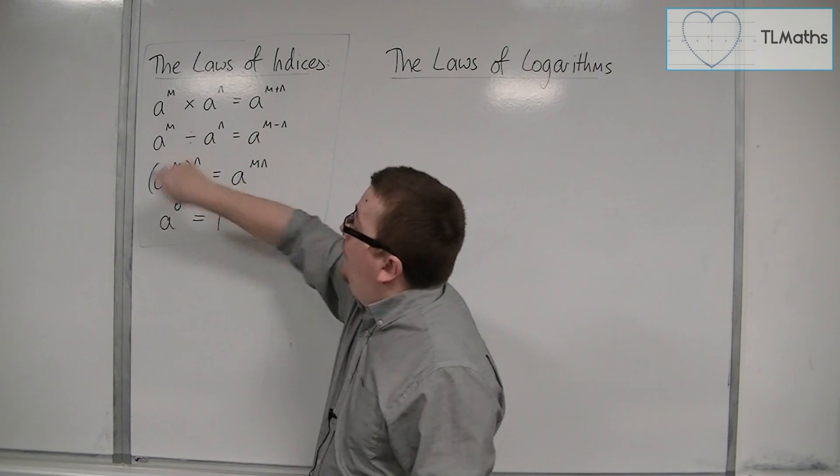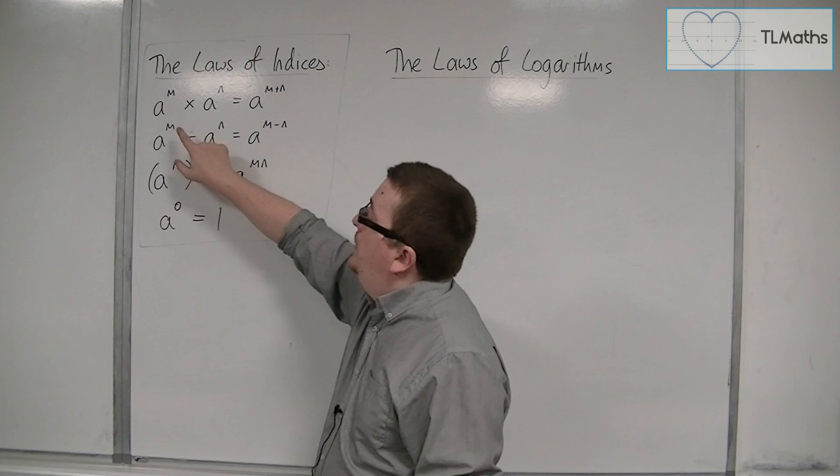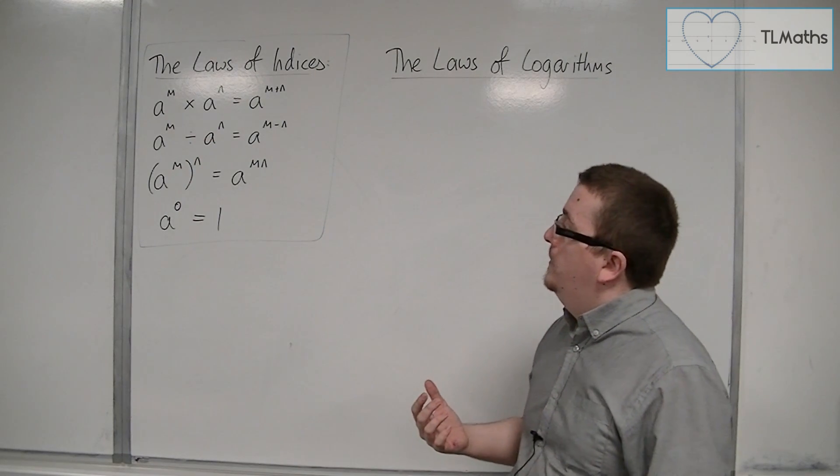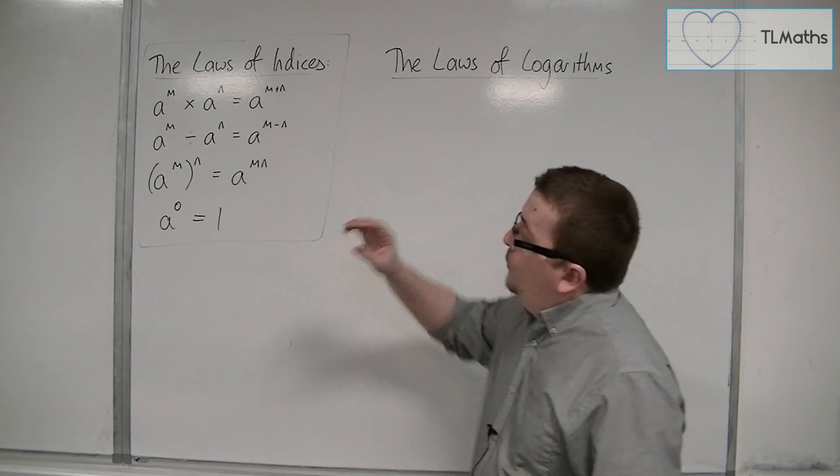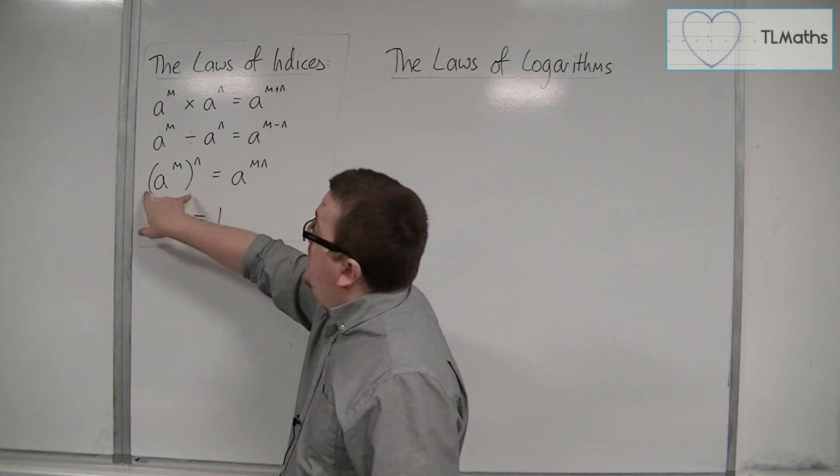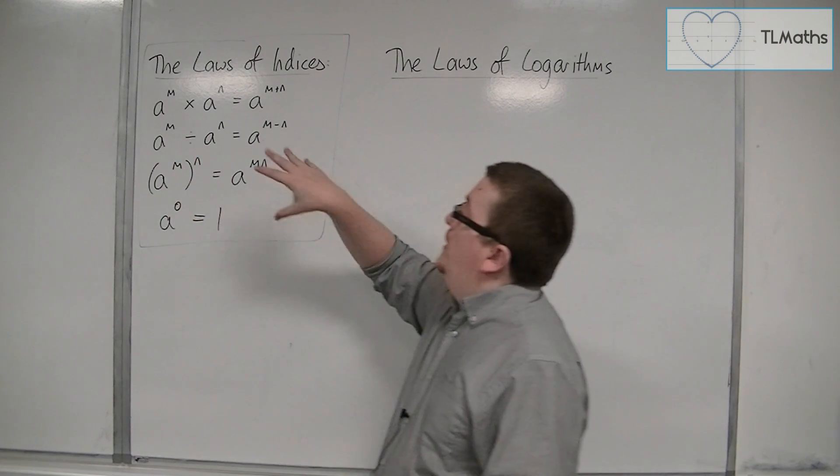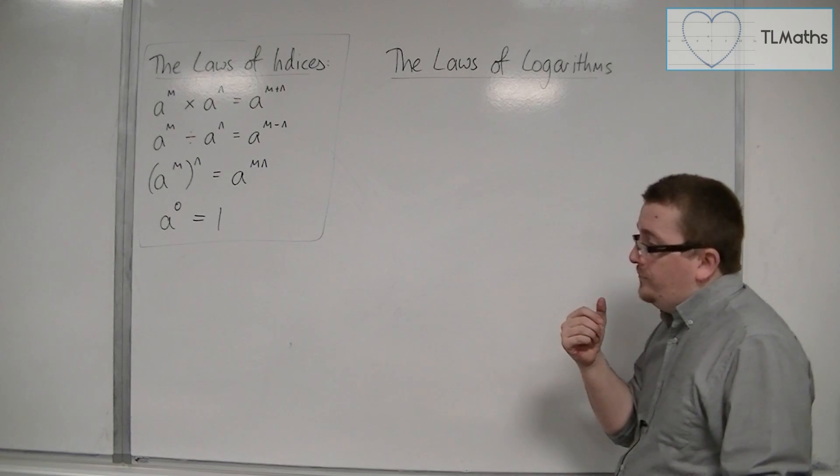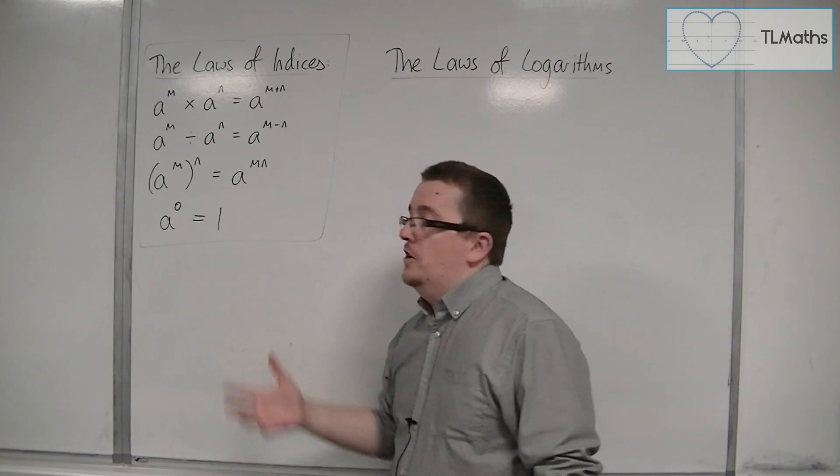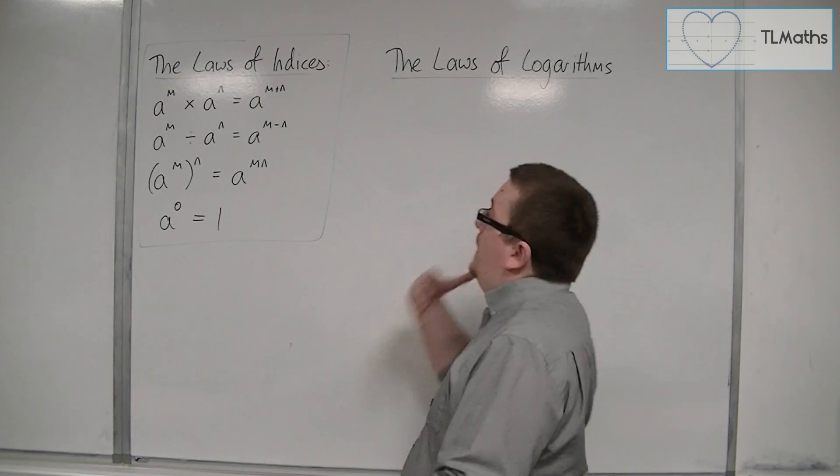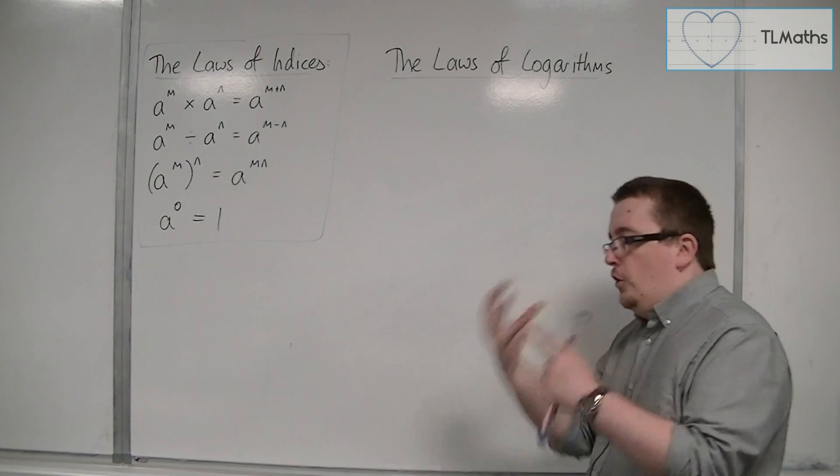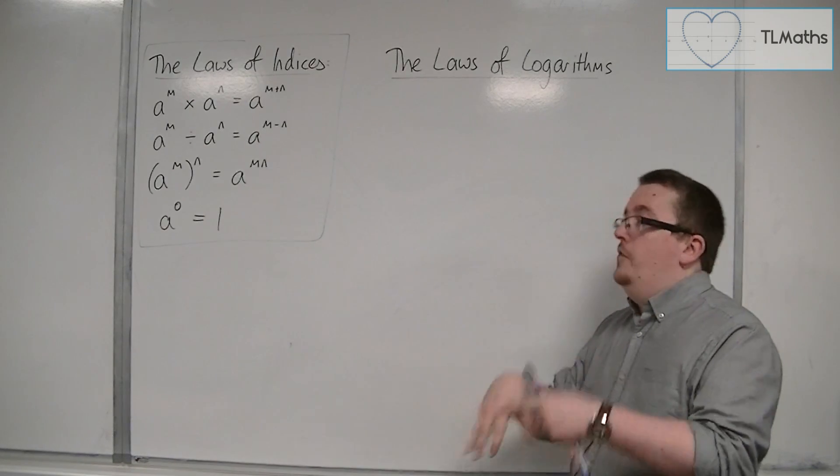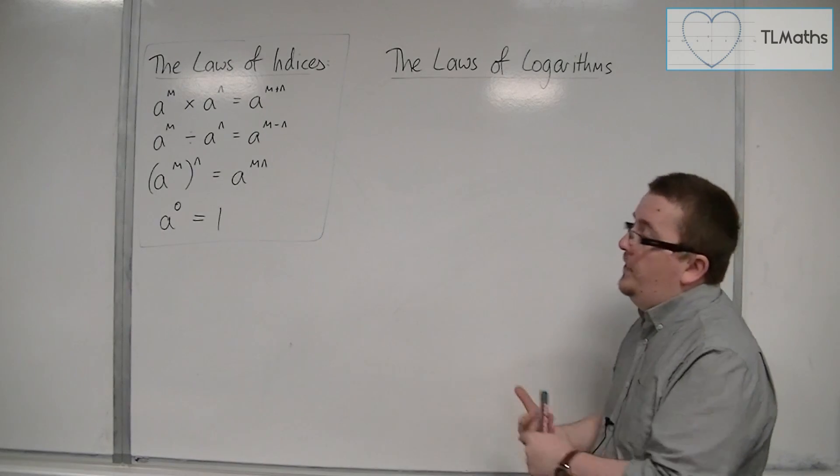When I divide with the same base number, the indices get subtracted from one another. We also have a to the m to the power of n equals a to the mn. And last but not least, a to the 0 is 1. There then must be logarithmic laws that relate to these.